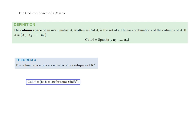Now we move to the next definition: the column space of a matrix. The column space of A is the set of all linear combinations of the columns of A. If we look at A as having columns A1 through AN, then Col(A) is defined as the span of {A1, ..., AN}. Theorem 3 states that the column space of a matrix is a subspace of R^N. Another way to conceptualize it: it's the set of all vectors b such that b = AX for some x in R^N — the set of all vectors that have a solution.